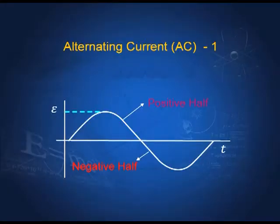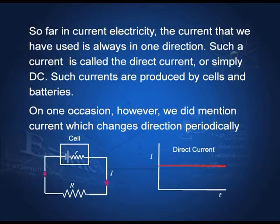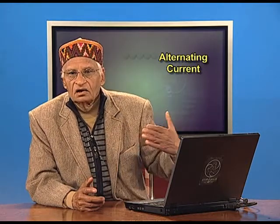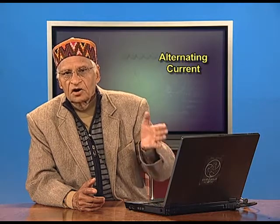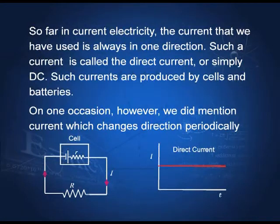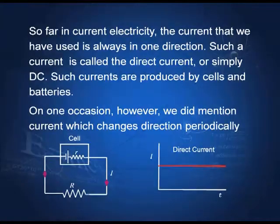In this lecture, we start with alternating currents, AC as it is called. So far in electricity and magnetism, you have dealt with current which is always in one direction. Now, we are going to use currents which are not always in one direction. For half the cycle, it is in one direction; for the remaining half cycle, it is in the opposite direction. Such currents are known as AC currents. The currents we have used so far, which are always in one direction, are called direct currents or DC. So, we are now going to use AC instead of DC.